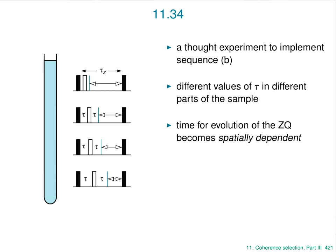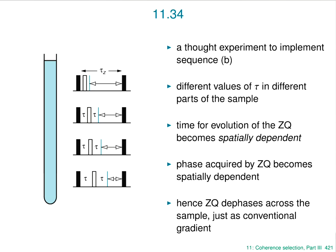The time for zero quantum evolution becomes spatially dependent. This should trigger recollection: when we talked about gradients, we talked about phase being spatially dependent. If the time is spatially dependent, the zero quantum evolves for different times and so you get different phases. In fact, this creates a phase for the zero quantum which varies along the sample, meaning the signal will dephase just as it would in a normal gradient. So this thought experiment, if you could actually do it, would lead to zero quantum dephasing across the sample.